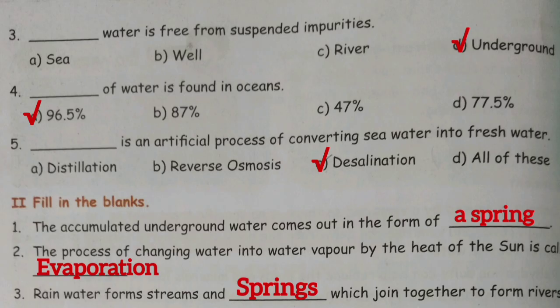Fifth one: dash is an artificial process of converting seawater into freshwater. Answer: option C, Desalination.